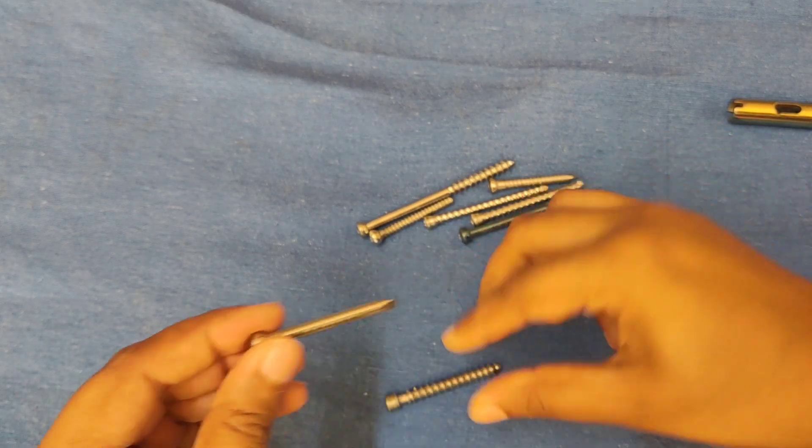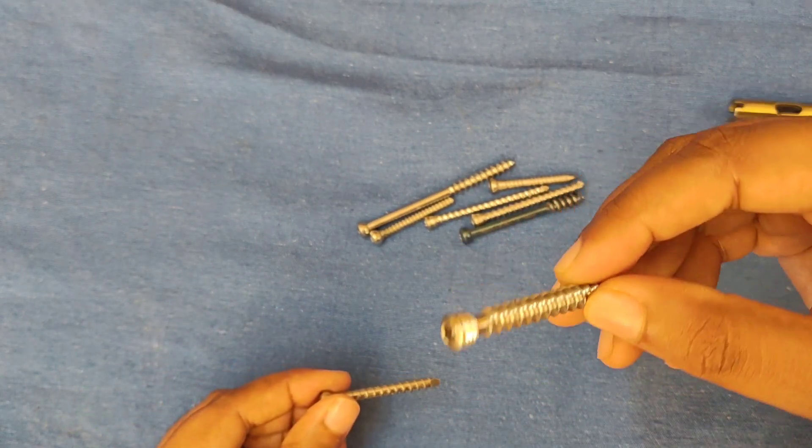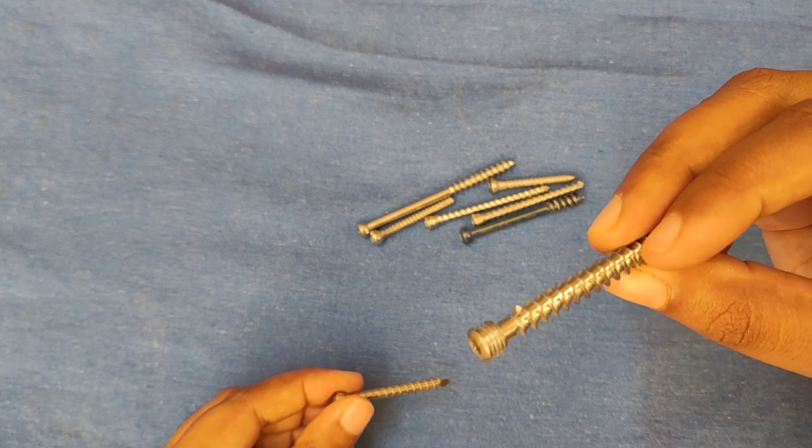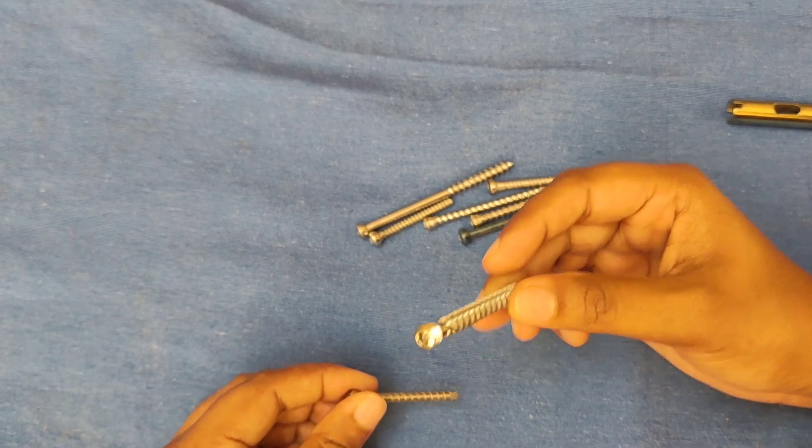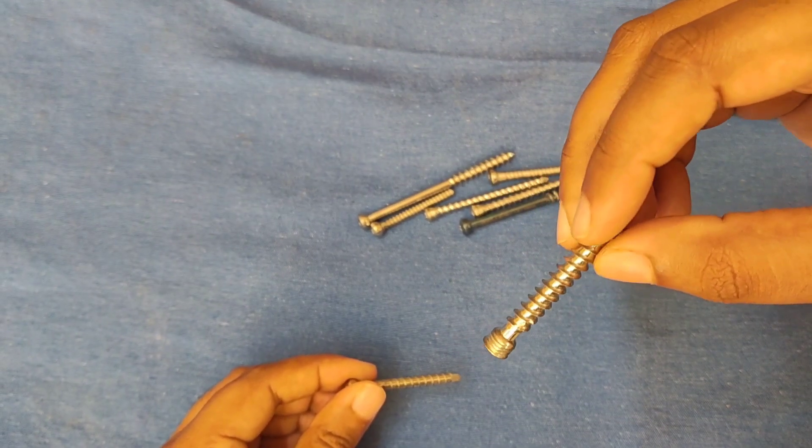In case of cancellous screw, it has a larger thread diameter and smaller core diameter. The tip is corkscrew and it has cutting flutes at the tip.